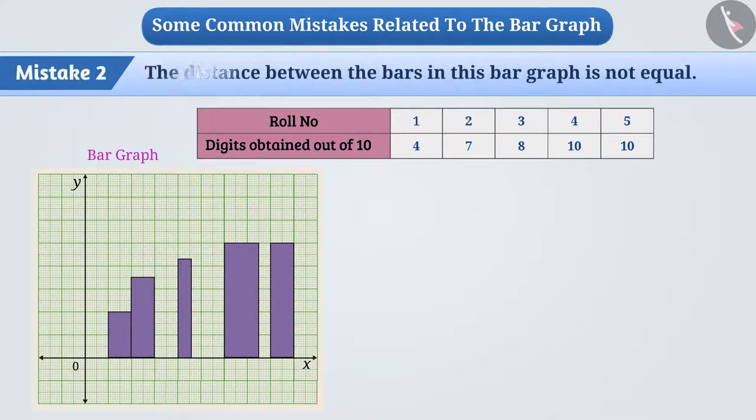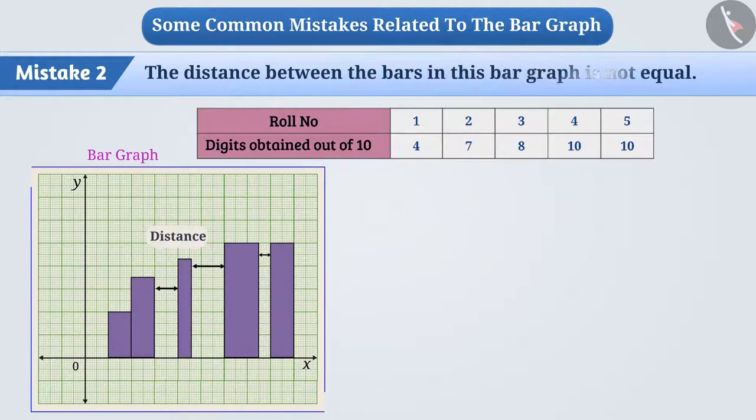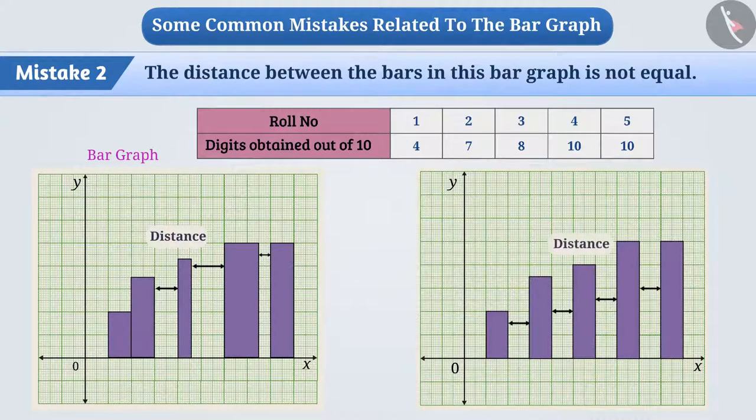Mistake 2: The distance between the bars in the bar graph is not equal. The distance between the bars in the bar graph is always equal.